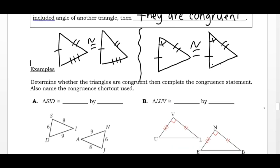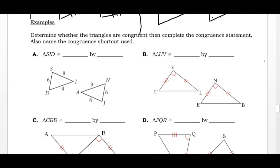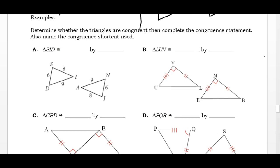We're going to determine if some triangles are congruent. I see a six here and a six here, an eight here and an eight here, a nine here and a nine here. The three sides of the first triangle match the three sides of the second triangle, so the Side-Side-Side rule tells me these triangles are congruent.